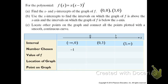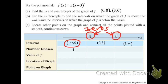We construct a sign chart, placing the zeros — the x-values that cause the function to equal zero — along the number line. On the interval from negative infinity to 0, we choose any number in that interval and determine whether f of x is always positive or always negative on that interval. On the interval from 0 to 3 and then from 3 to infinity, we do the same. This sign chart is really important for determining whether the function is above or below the x-axis on each interval.